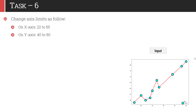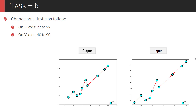In task 6, we will set the axis limits. By changing the axis limits, we can zoom in or zoom out the graph. For this graph, you have to set the x-axis limit to 22 to 55, and the y-axis limit to 40 to 90. Once you apply these changes, our graph will shrink and it looks like this — it is more appealing compared to the previous one.